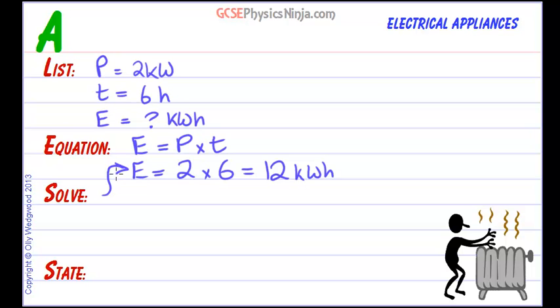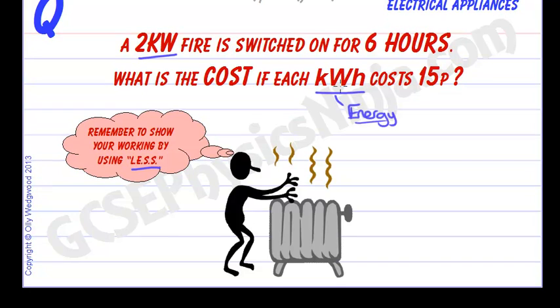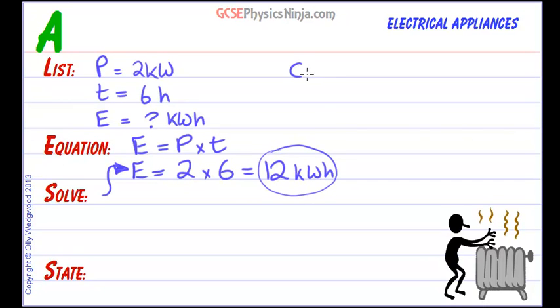Sorry, I should put the numbers in here. That's the solve part, where you put the numbers in. Now, we have to find the cost. Something we didn't mention was how much does each kilowatt hour, sometimes called a unit, cost? It's 15 pence. So let's put that on our list. The cost equals 15 pence per kilowatt hour.